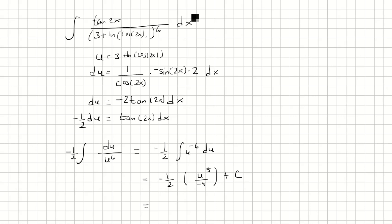The negative 1 half times negative 1 fifth becomes 1 tenth, u to the negative 5. And then u, we said, was 3 plus ln of cosine 2x.